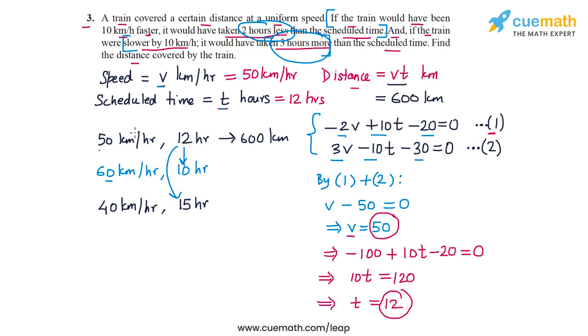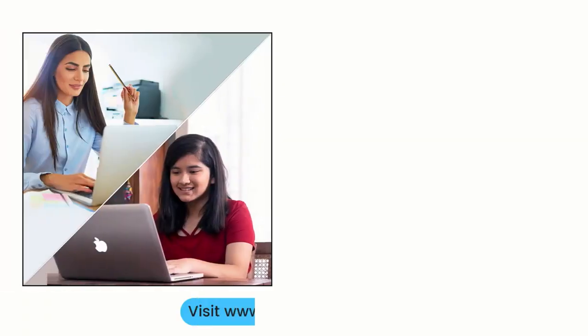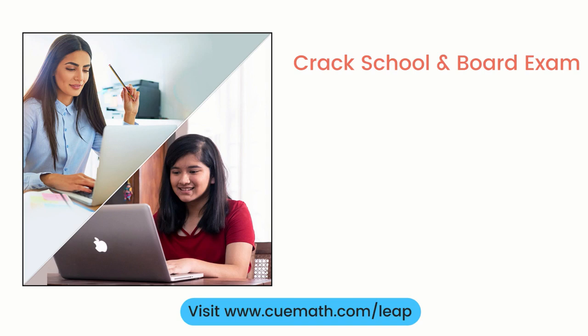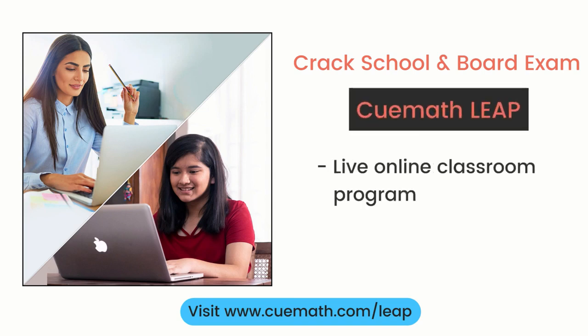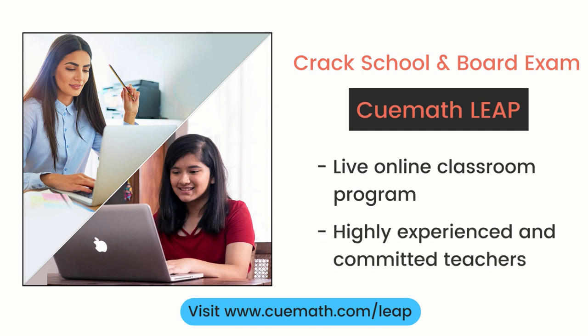Our answer is confirmed: the usual speed is 50 kilometers per hour, the usual time is 12 hours, and the distance covered by the train is 600 kilometers. To learn more about how QMath can help you crack school and board exams, explore QMath Leap — a live online classroom program run by highly experienced teachers.